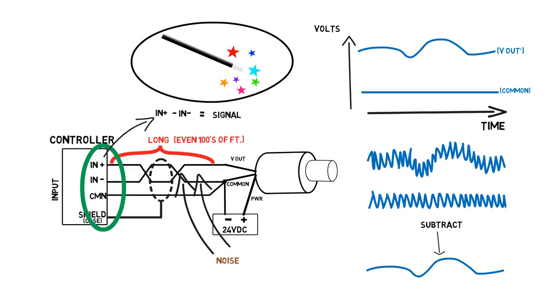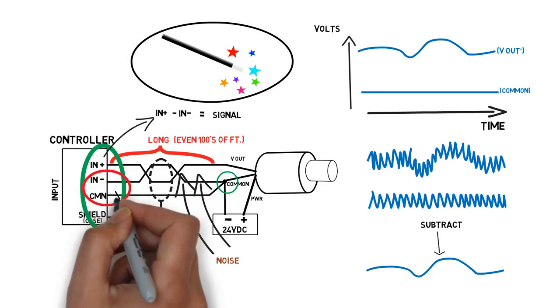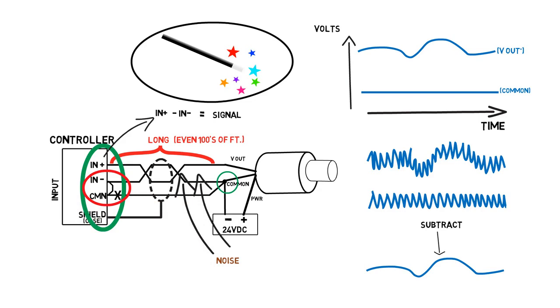In this example, the in minus and common pins are connected at the sensor. If we cheat and connect them at the input, the controller will still receive the signal, but let's see what happens when the wire is subjected to noise.